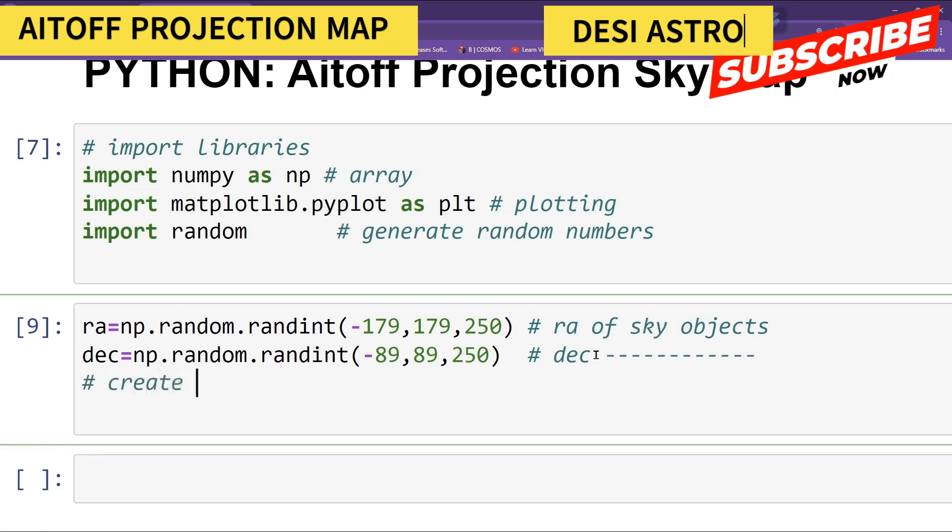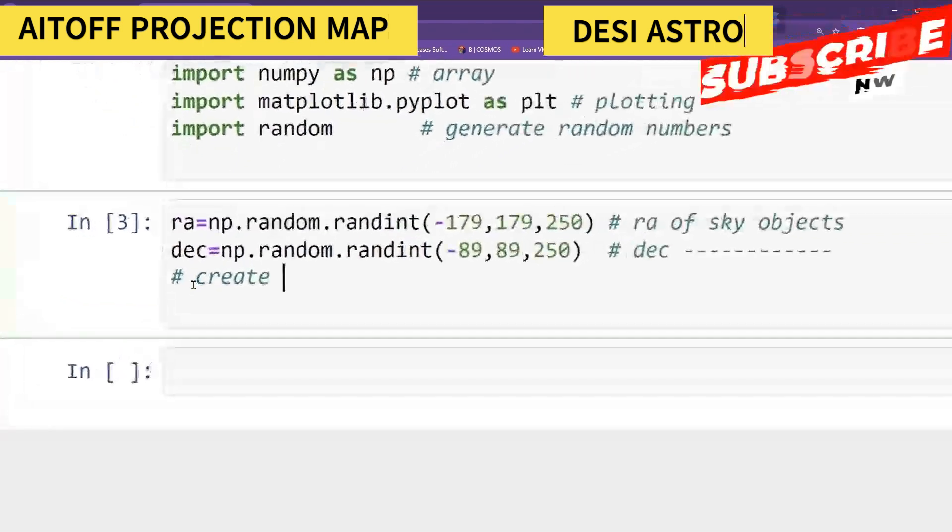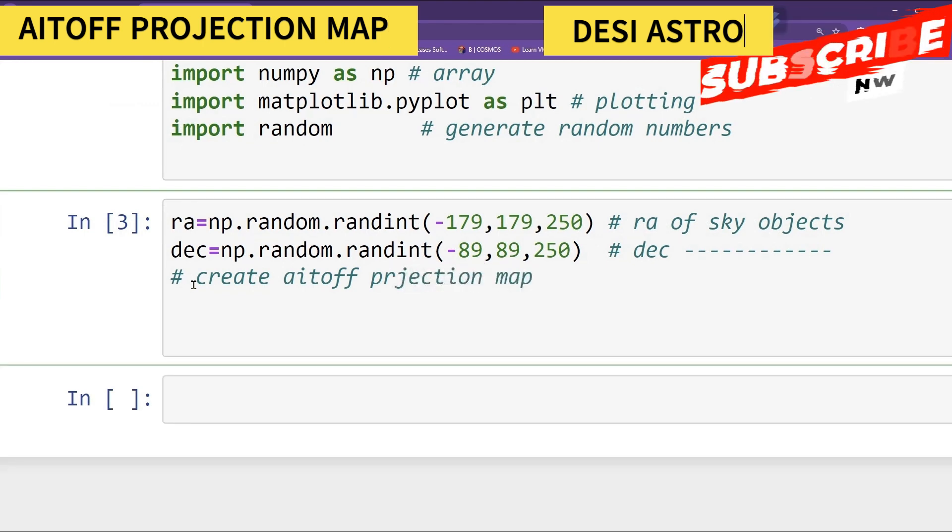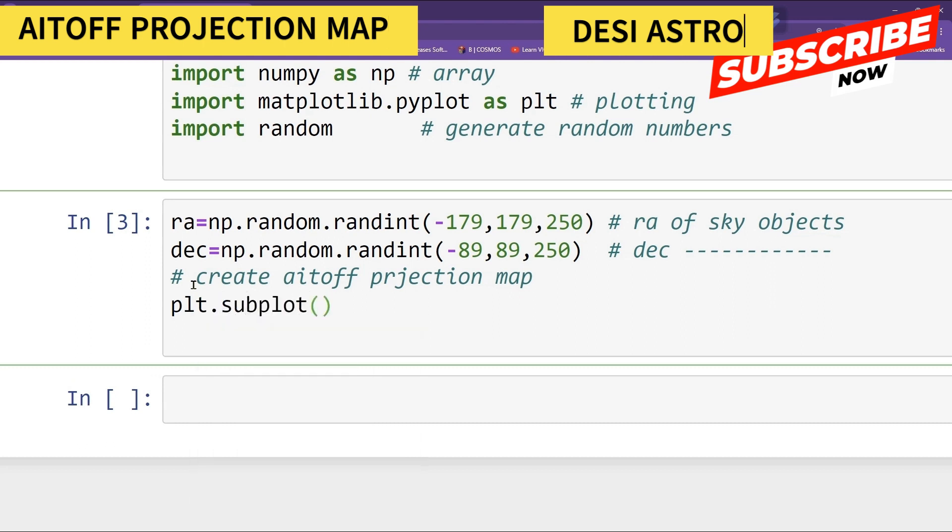Now create Aitoff projection map. For that I will type here plt.subplot and I will give my projection map equal to Aitoff.